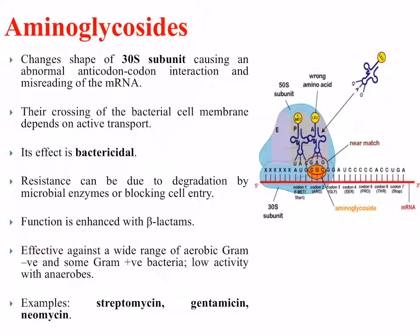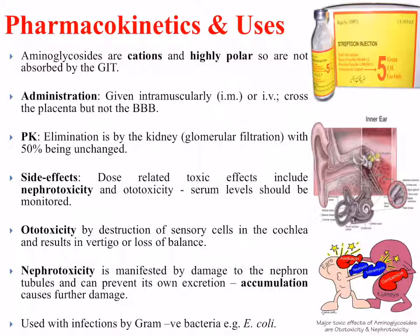The aminoglycosides are effective against a wide range of aerobic gram-negative and some gram-positive bacteria, but have low activity against anaerobes. Examples include gentamicin, neomycin, and streptomycin. In terms of pharmacokinetics, the aminoglycosides are generally cations and highly polar, so they're not absorbed well by the gastrointestinal tract and must be administered parenterally — intramuscularly or IV. They cross the placenta but not the blood-brain barrier. Elimination is by the kidney via glomerular filtration, with 50% of the molecule remaining unchanged.